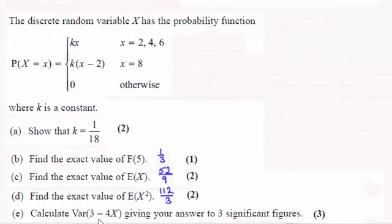Hi there, now for this last part of the question, part E, we've got to calculate the variance of 3 minus 4X, giving your answer to three significant figures. I've also put in the answers to B, C and D, just in case we need them for part E. If you'd like to have a go at this, I'll give you a moment to pause the video and try it.